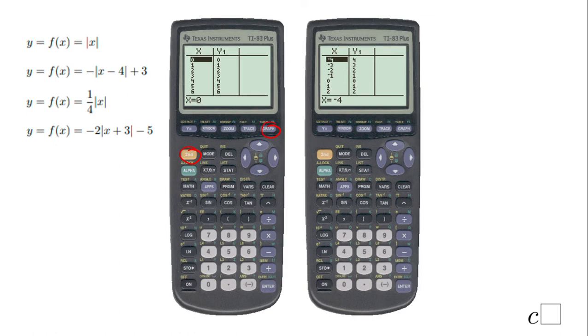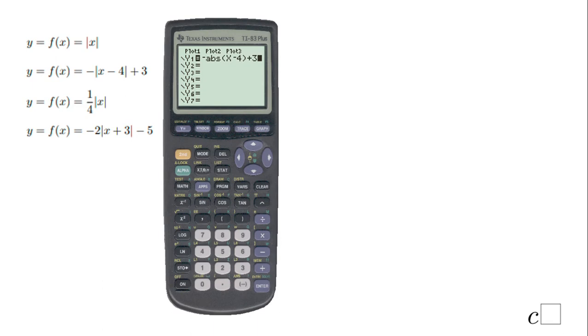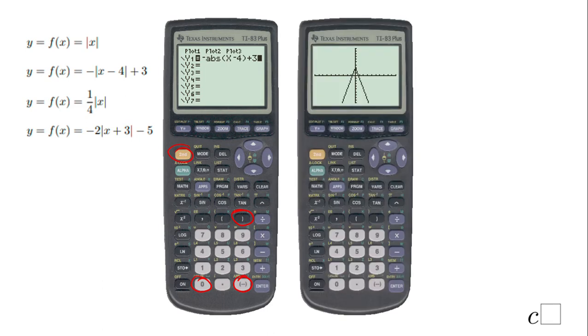Let's move to the second one, and you notice how I put it in again. Remember, second catalog. First of all, don't forget to put this negative, not this one. The negative is right here; this is a minus. Then second catalog, you're going to have the absolute value. Type in X minus 4, you close the parentheses, and then plus 3, and you should be fine.